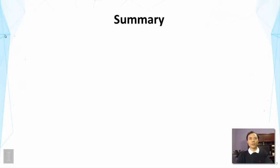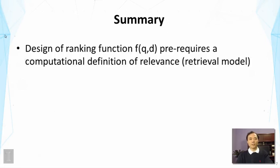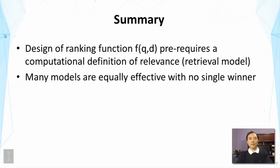So to summarize, the main points made in this lecture are: first, the design of a good ranking function requires a computational definition of relevance, and we achieve this goal by designing an appropriate retrieval model. Secondly, many models are equally effective, but we don't have a single winner yet. Researchers are still actively working on this problem, trying to find a truly optimal retrieval model.